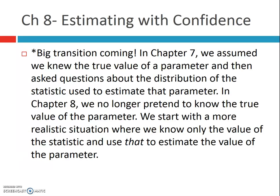This is a really big transition. In the last chapter, Chapter 7, we assumed that we knew the true value of the parameter — we assumed we knew P, we assumed we knew mu, the population mean — and then we asked questions about the distribution of the statistic used to estimate that parameter. But now, we no longer pretend to know the true value. We're going to start with a more realistic situation where we know only the value of a statistic from a sample, and then use that to estimate the value of a parameter.